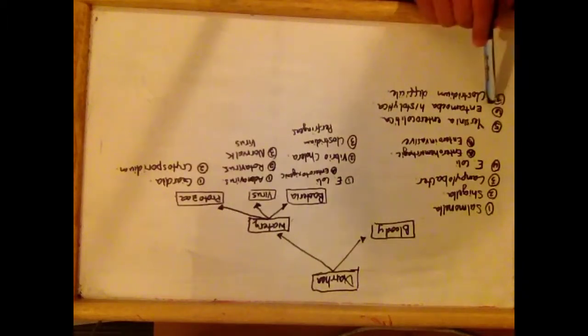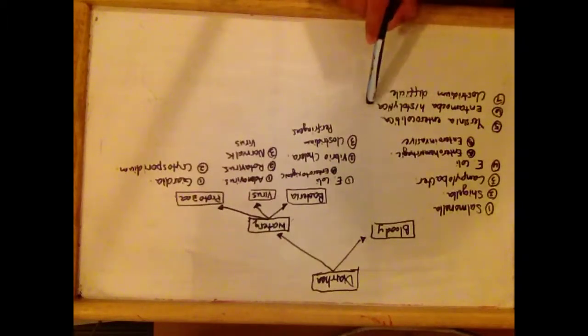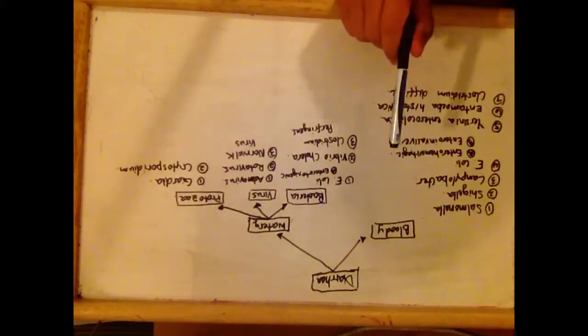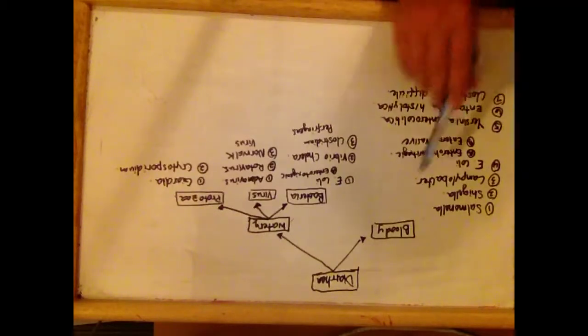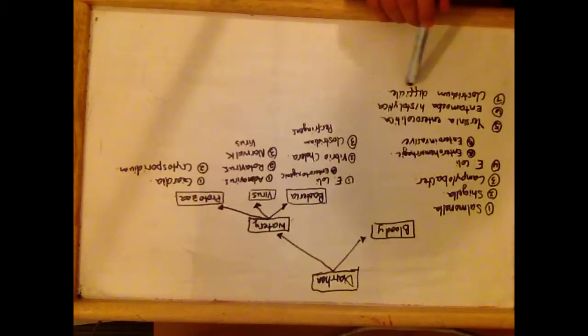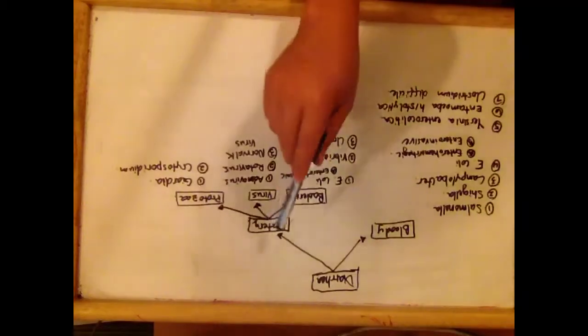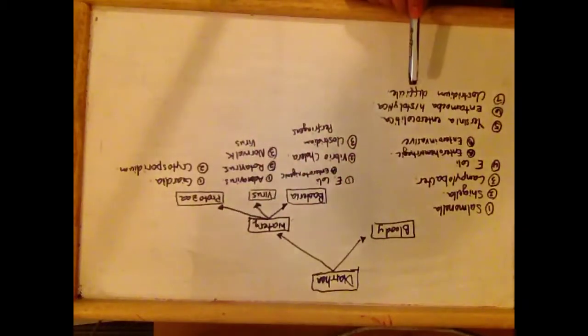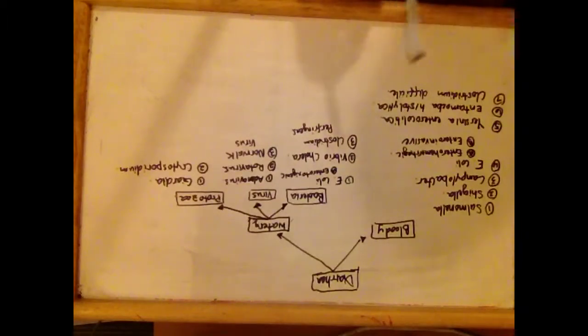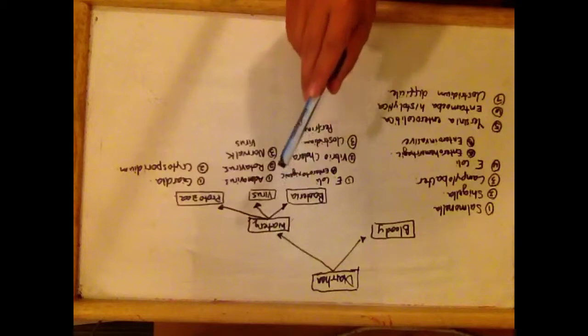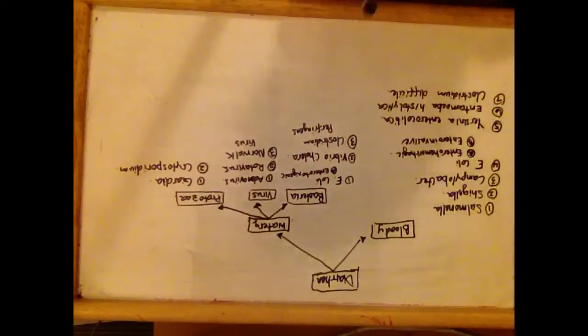The only protozoa that causes bloody diarrhea is Entamoeba histolytica. Clostridium Difficile also causes bloody diarrhea, but it also causes watery diarrhea. So Clostridium Difficile causes both bloody diarrhea and watery diarrhea.